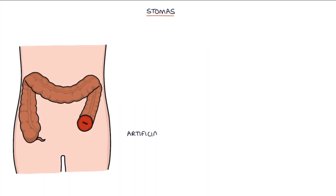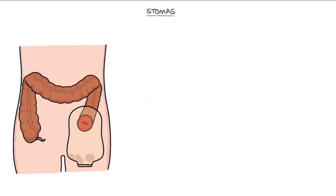Stomas are artificial openings of a hollow organ, for example the bowel. The bowel or urinary system is artificially opened onto the surface of the abdomen, allowing feces or urine to drain. This allows it to bypass the distal portions of the bowel or the urinary tract. A specially adapted bag called a stoma bag is fitted around the stoma on the abdomen to collect the waste products and is emptied as required.